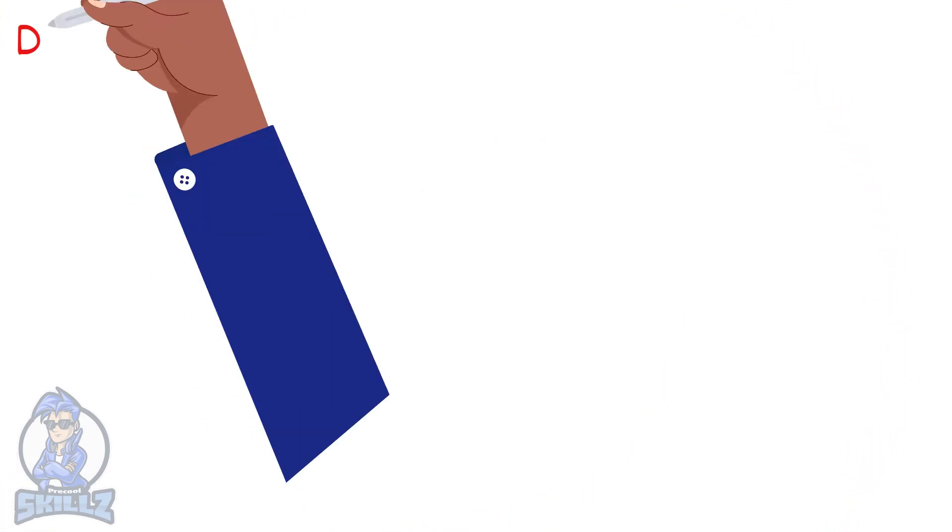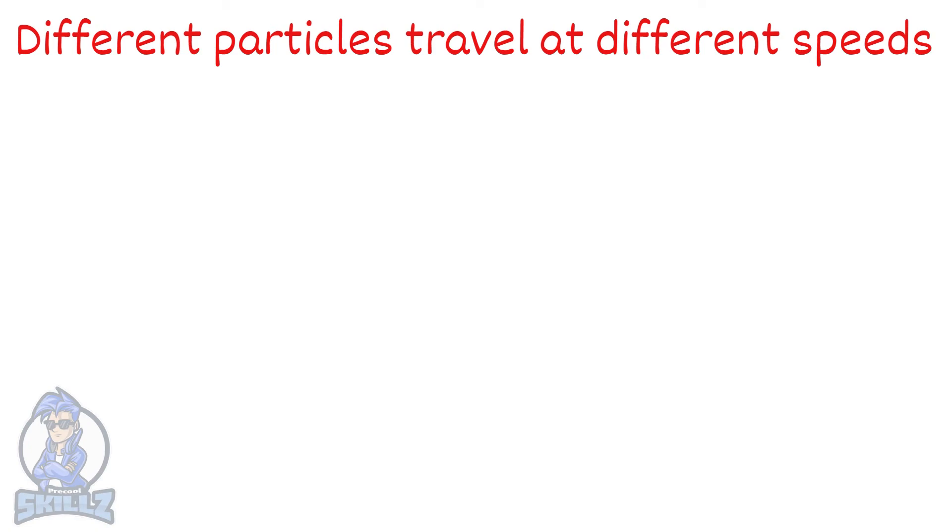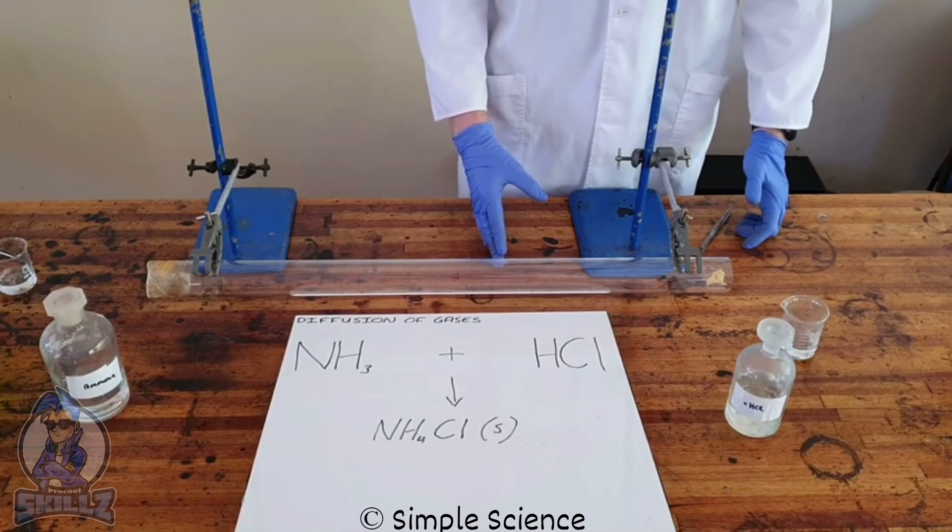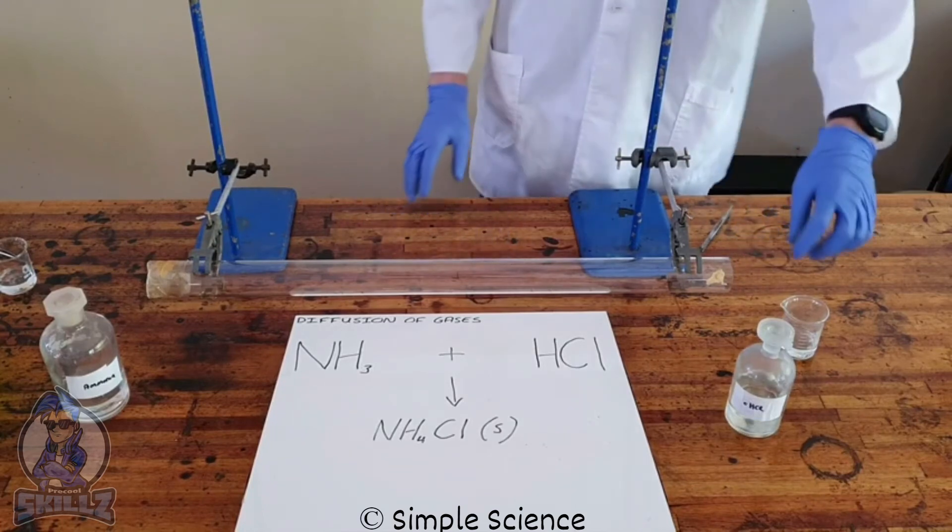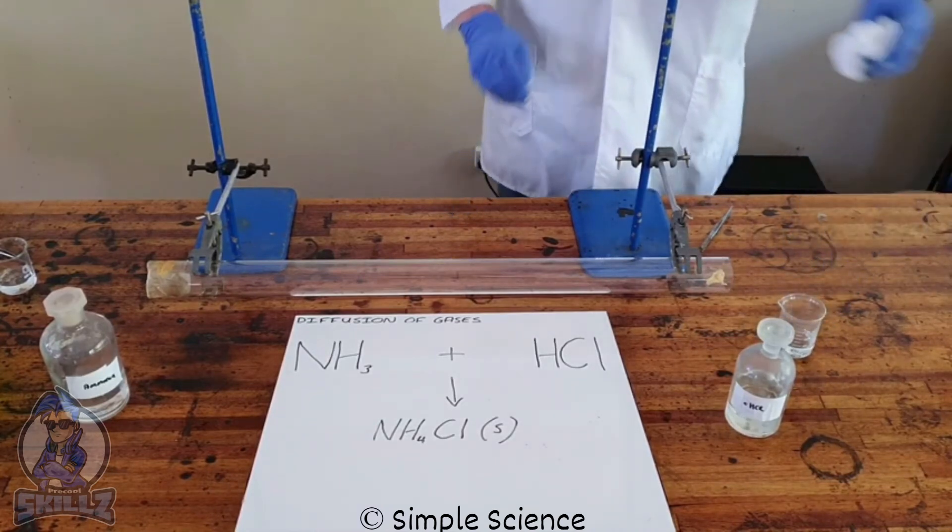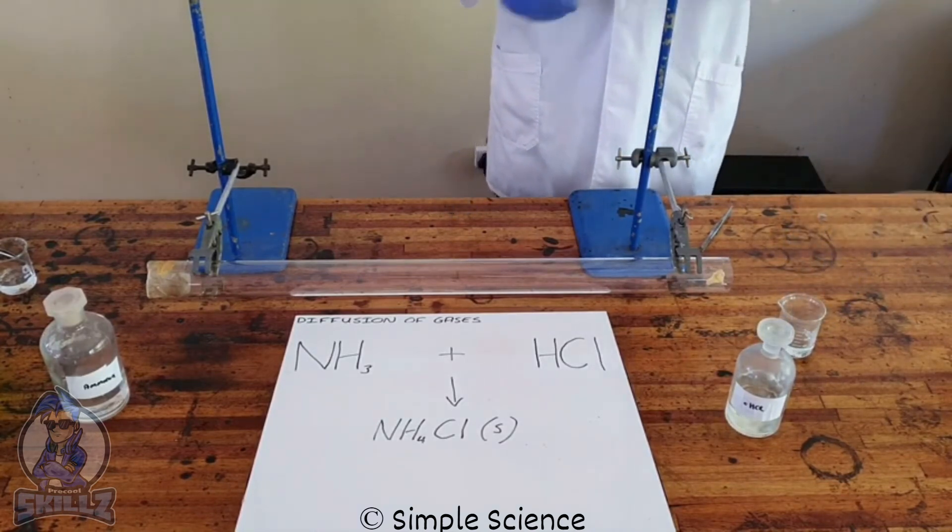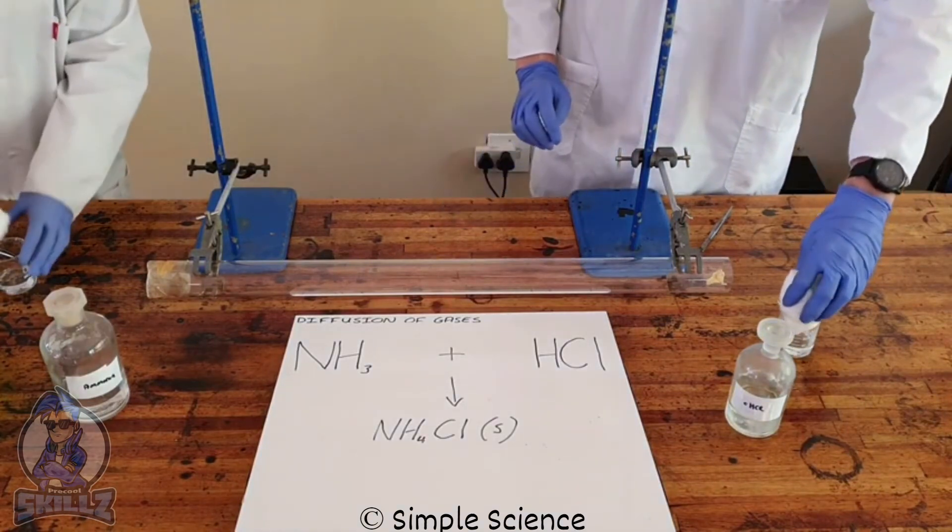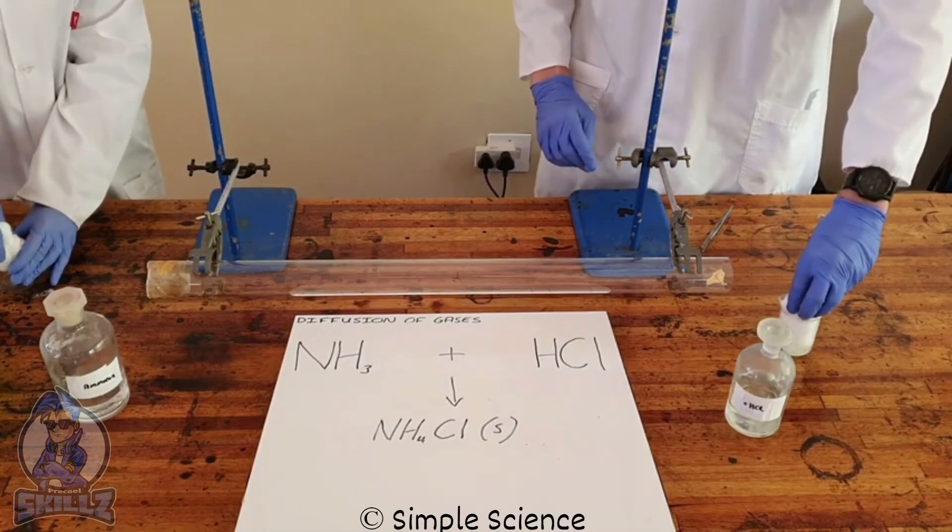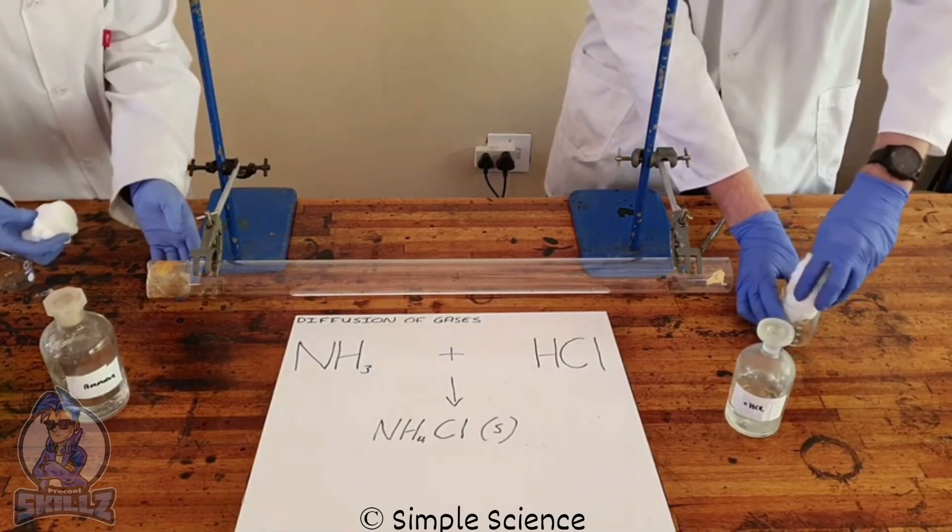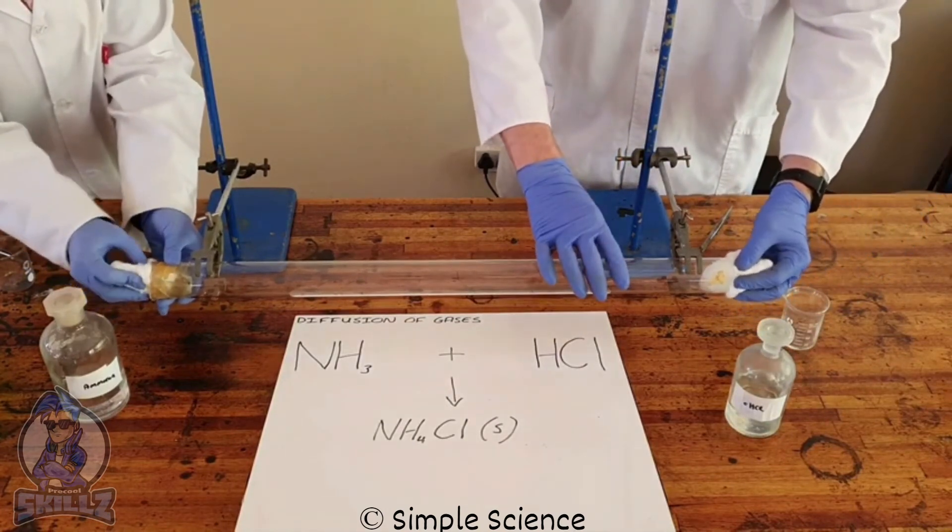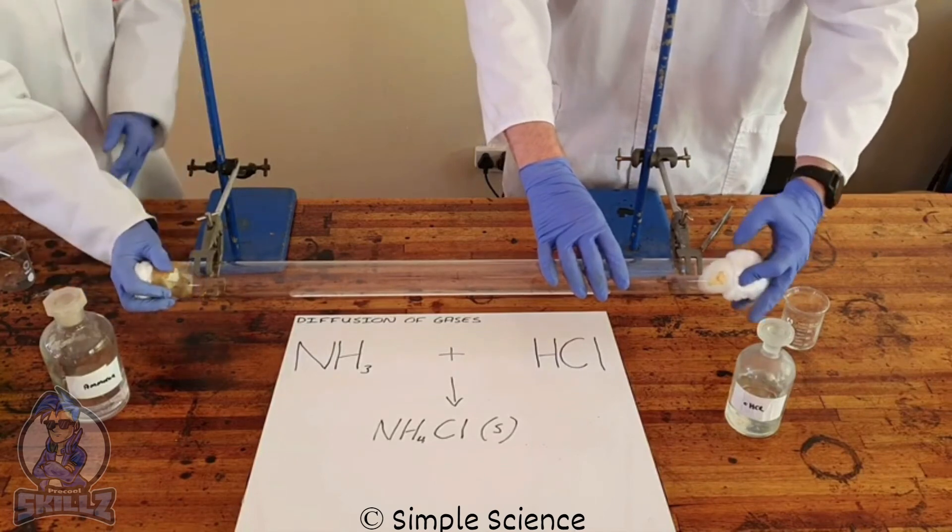Even in diffusion, different particles travel at different speeds. Here's an experiment to show that. I'm going to show you that gases move at different speeds. And so what we do here is we take these gases in their liquid form. And we are going to dip each of those substances in cotton wool. And once we have done that, we then place that cotton wool inside this gas tube.